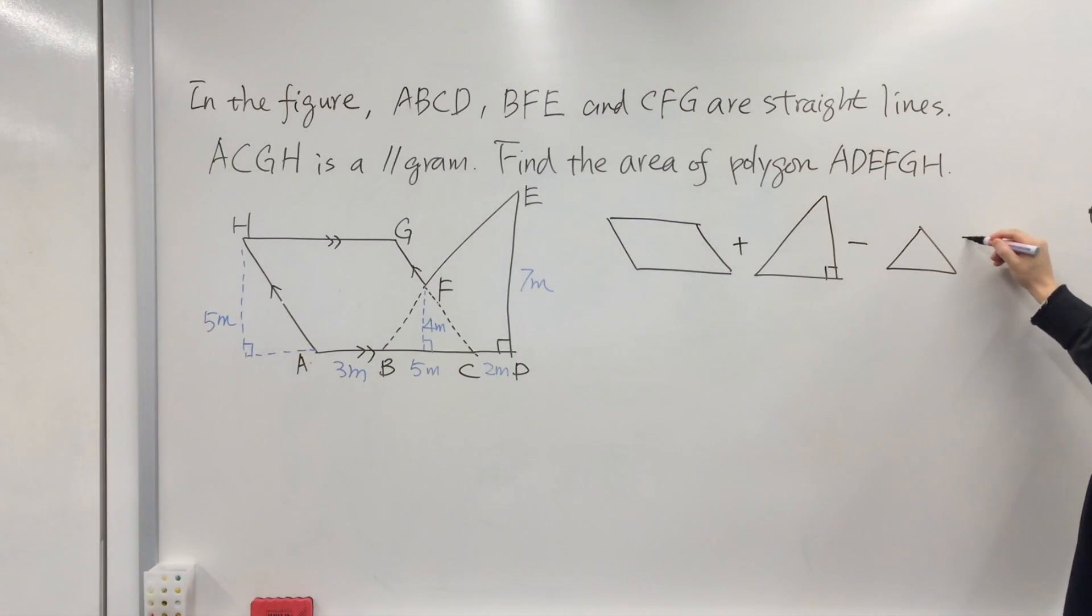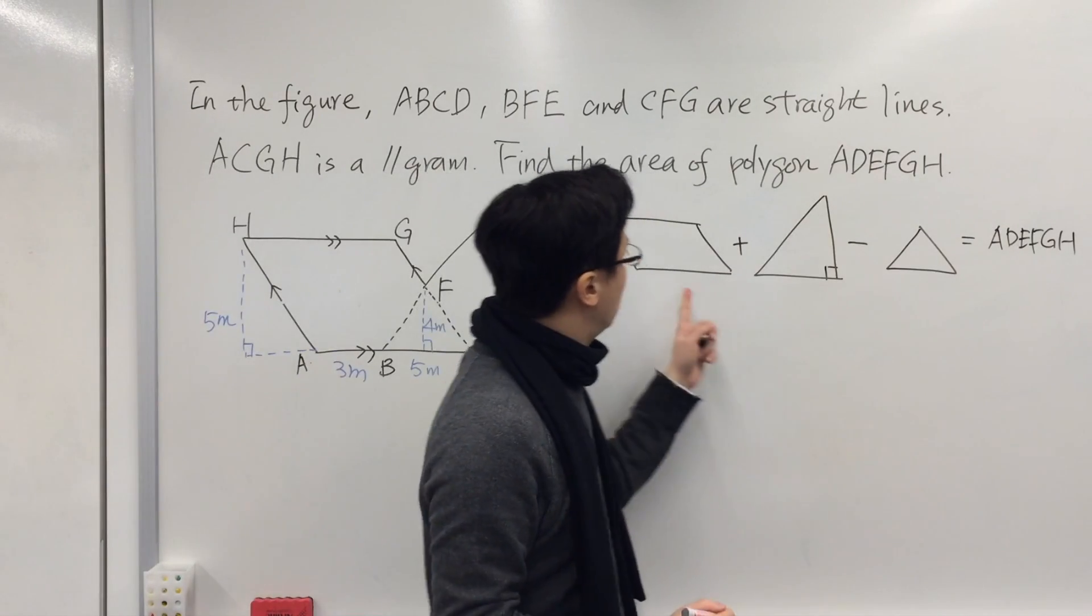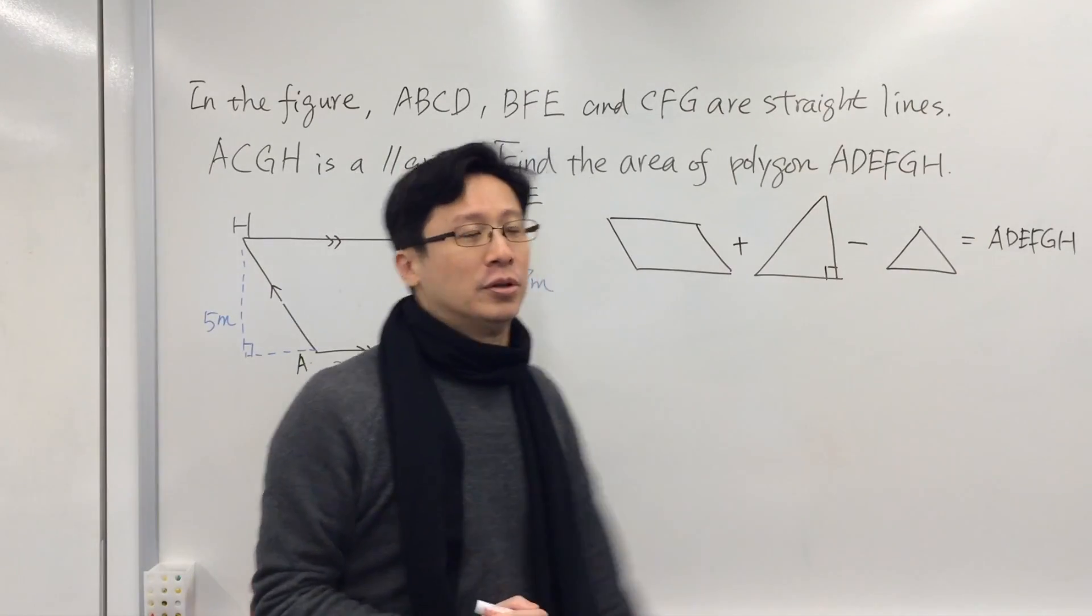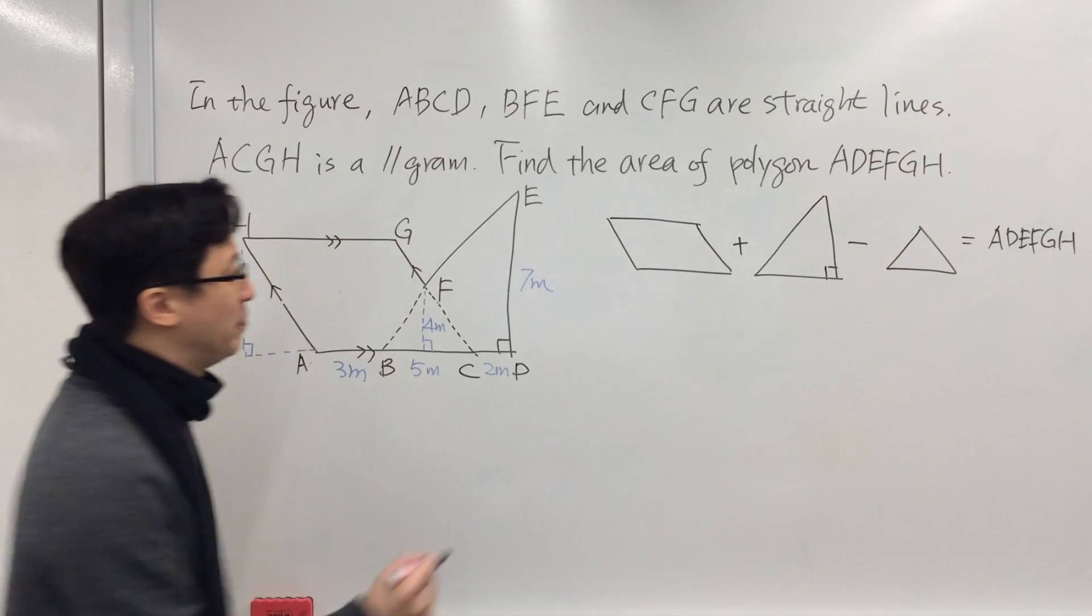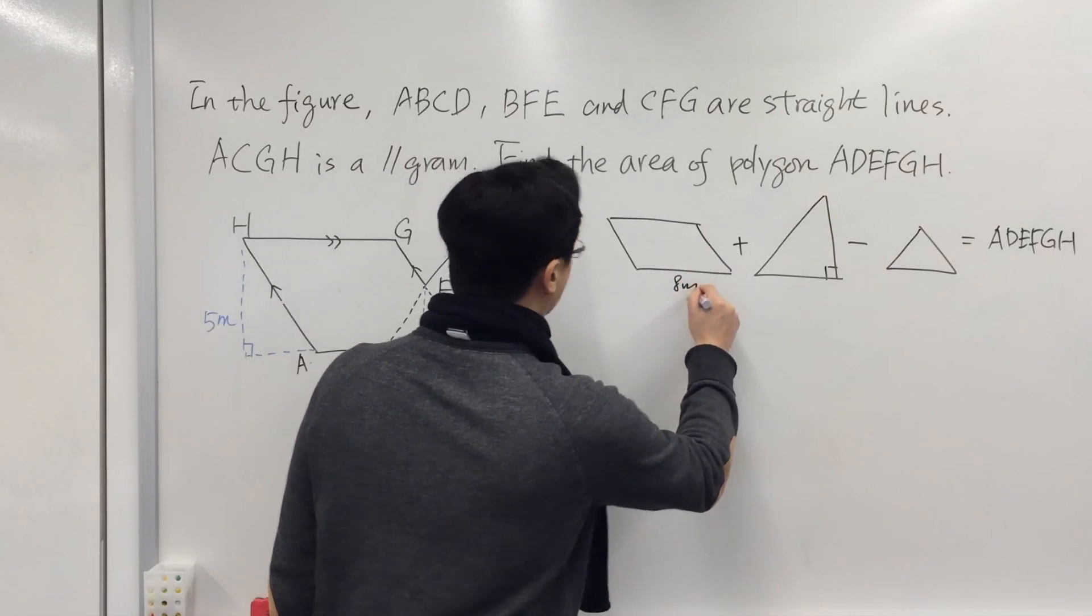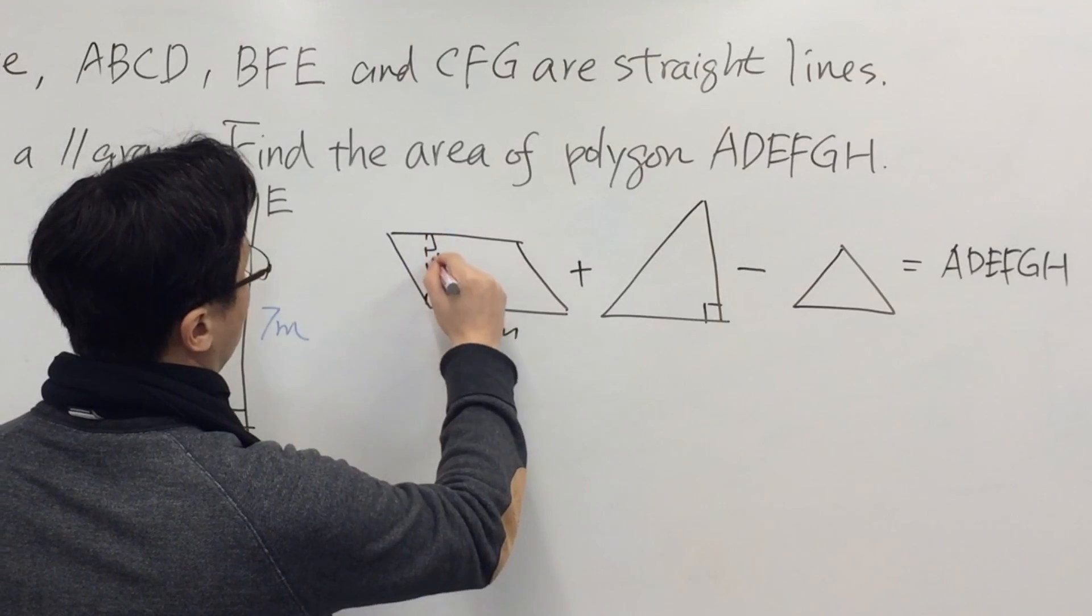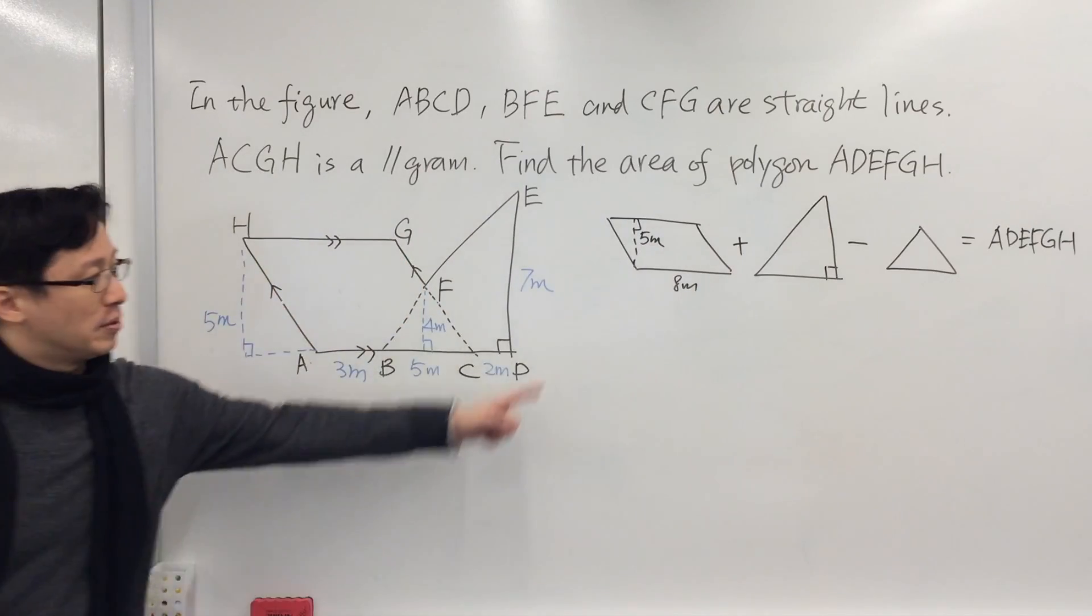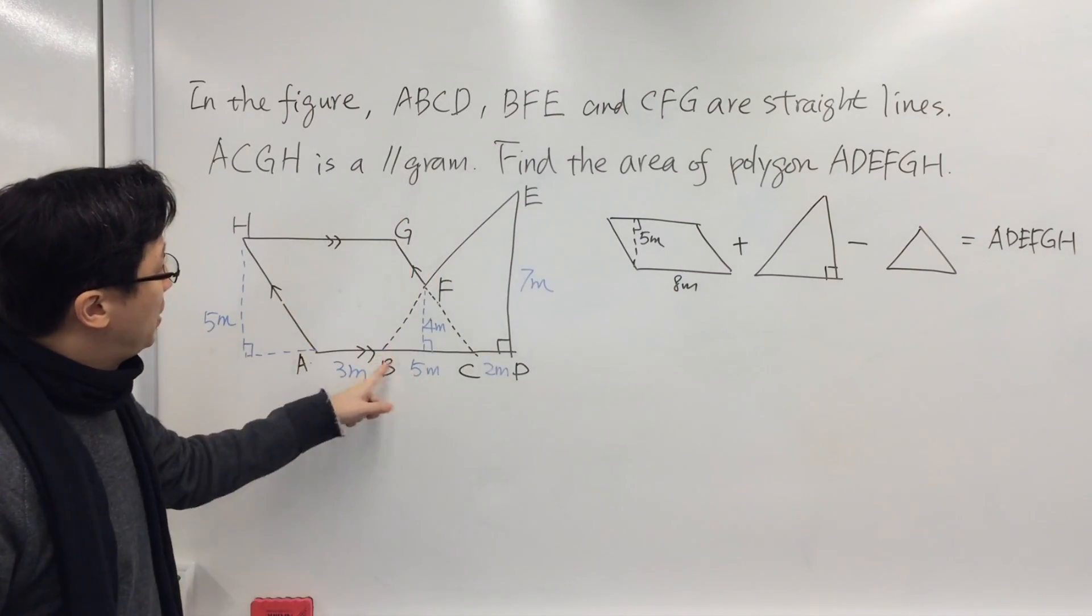Now we can write down the size of these figures. We have a parallelogram and two triangles. The base is 3 meters plus 5 meters, that is 8 meters, with height 5 meters. We can draw the diagram right here so that it will be easier to find the final answer.